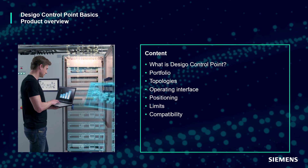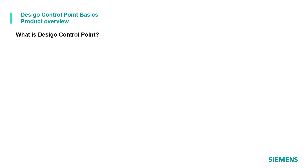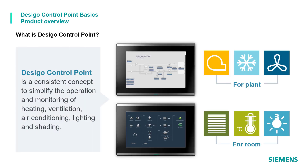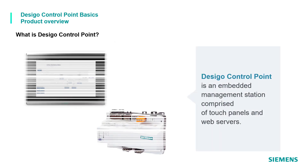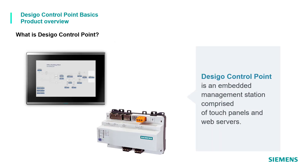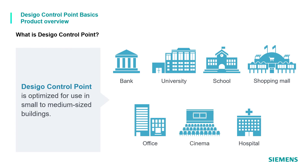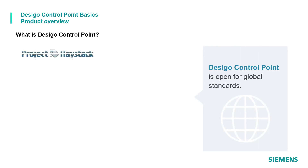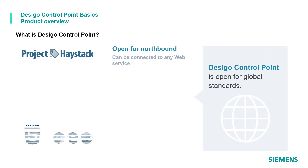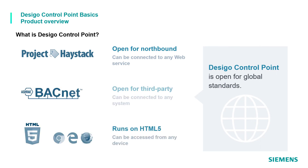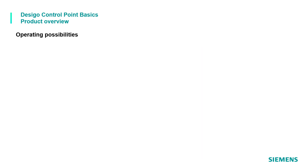What is DCGO Control Point? It is a consistent concept to simplify the operation and monitoring of heating, ventilation, air conditioning, lighting, and shading. It is also an embedded management station comprised of touch panels and web servers. DCGO Control Point is optimized for use in small to medium-sized buildings. It is open for global standards, can be connected to any web service and third-party systems, and runs on HTML5, being accessible from any device.